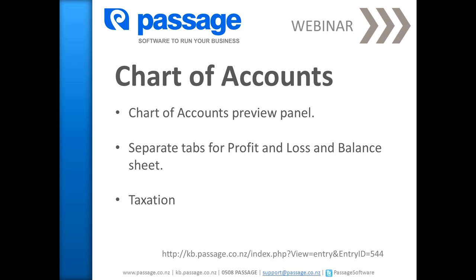The Chart of Accounts layout in Sage Accounts 2012 has been improved. The three areas improved are: the Chart of Accounts preview panel, which now shows you the layout for your profit and loss or balance sheet reports as you make changes — making it easier to see if your records are correct; separate tabs for profit and loss and balance sheet, making it easier to distinguish between the two ranges; and a new Taxation section for recording taxation after net profit.